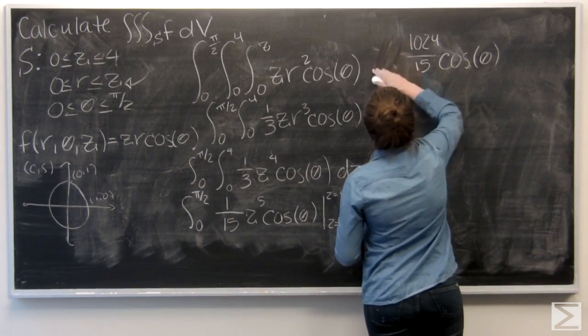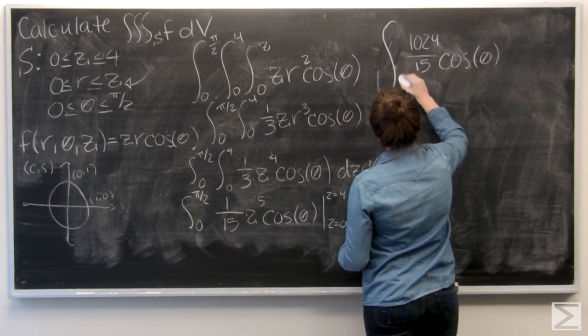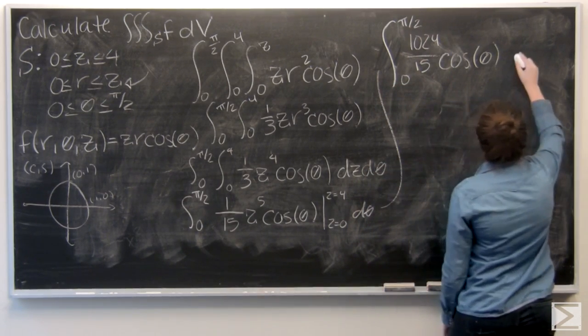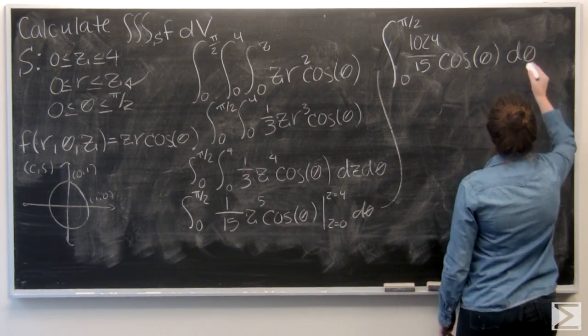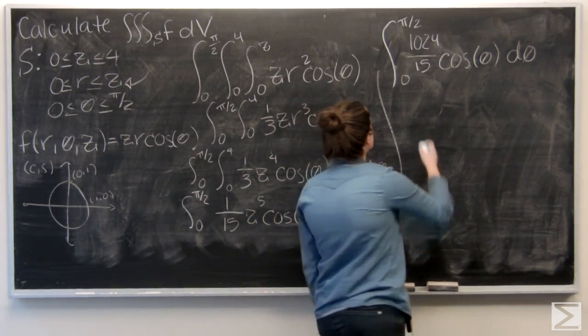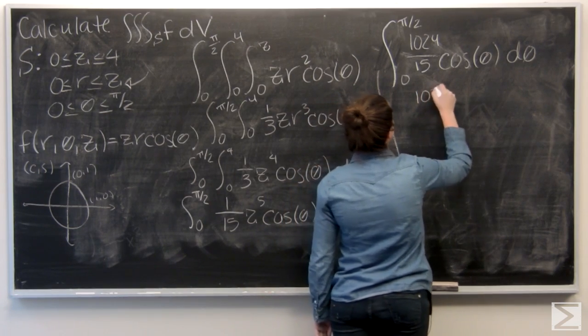So I have one more integral to do, and it is with respect to theta. The integral of cosine theta is going to be sine theta. 1024 over 15 just hangs out.